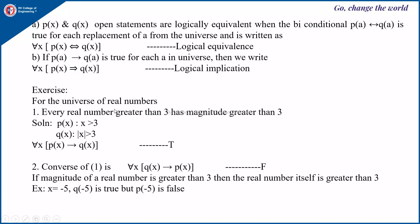Example: for the universe of real numbers, every real number greater than 3 has a magnitude greater than 3. Here P(x) is x > 3 and Q(x) is |x| > 3. This can be written as ∀x P(x) → Q(x), and this is true because if x > 3 then the absolute value is definitely greater than 3, but not the vice versa.